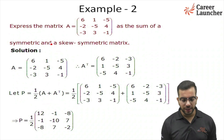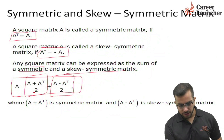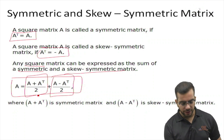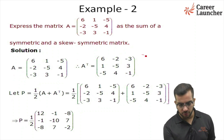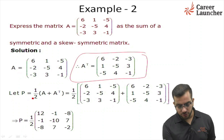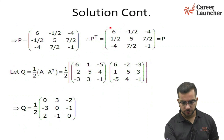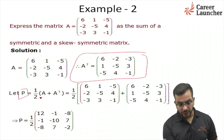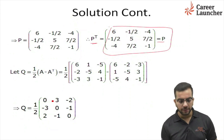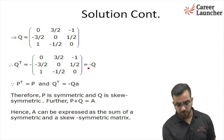Example 2: express matrix A as the sum of a symmetric and skew symmetric matrix. A matrix can be represented as the sum of its symmetric and skew symmetric parts. First, find A transpose, then let P equal to (A plus A transpose) divided by 2 — this is the symmetric part of matrix A. Finding this, we get P equal to the resulting matrix. We can verify that P transpose equals P, which proves that (A plus A transpose) divided by 2 is the symmetric part.